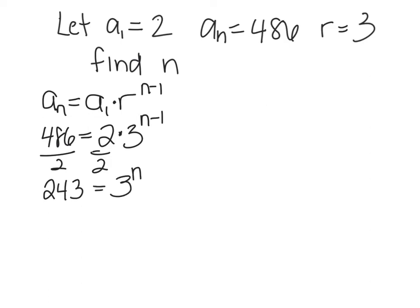243 equals 3 to the N minus 1 power. And how do we solve equations when the variables are in the exponents? Logs. Or, I could rewrite it as a log, or I could rewrite 243 as a power of 3. So 243 is 3 to what power? The 5th. So, if I rewrite it, 243 is 3 to the 5th. And then what do I do? 5 equals N minus 1. So, N equals 6.